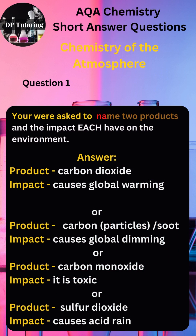Answer for question 1. Remember, you need to give two products and their impact on the environment. Product: carbon dioxide — impact: causes global warming. Or, product: carbon particles (soot) — impact: causes global dimming. Or, product: carbon monoxide — impact: it is toxic. Or, product: sulfur dioxide — impact: causes acid rain. Any two of these combinations will give you full marks.